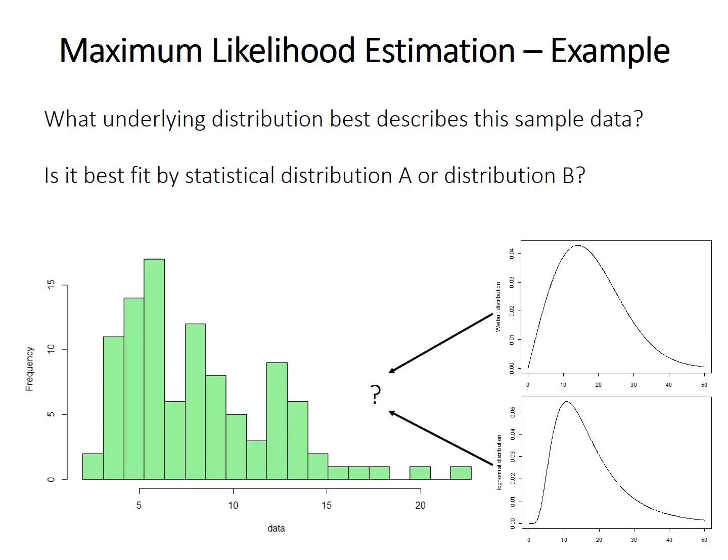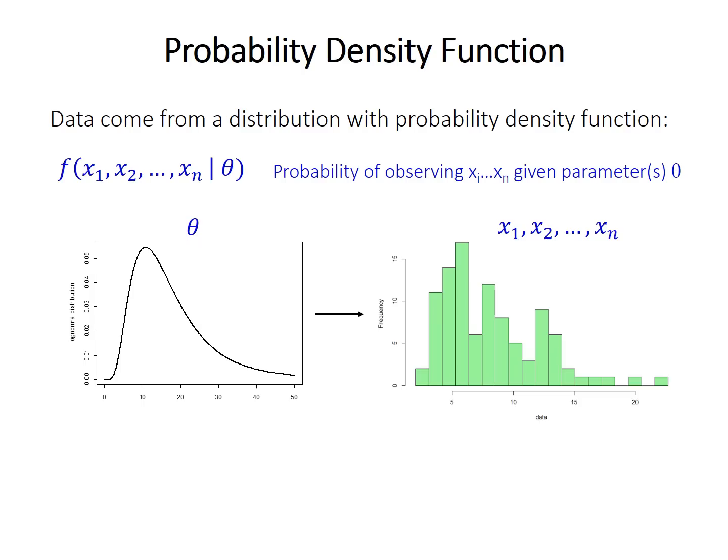So let's take an example. Let's say we have some data, like this histogram here, they're like asteroid sizes or something like that. We maybe want to know if it's best fit by statistical distribution A or statistical distribution B. And so I'm not going to cover distributions in this course, but there's a lot of them. Different ones apply in different circumstances. So basically, by fitting a particular distribution and knowing that a particular distribution is the best fit for this data, we can learn something about the underlying processes.